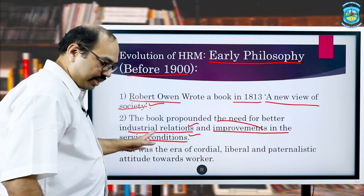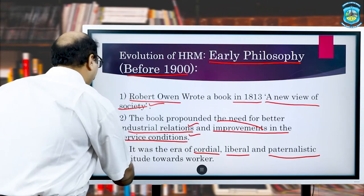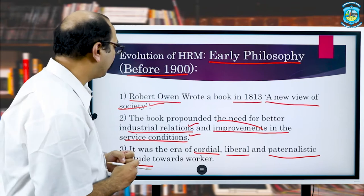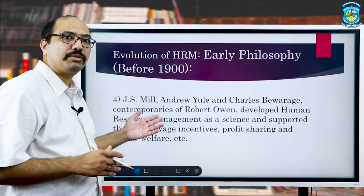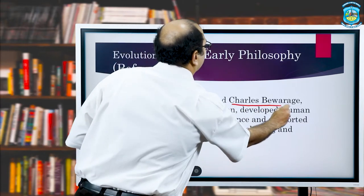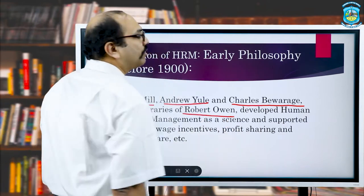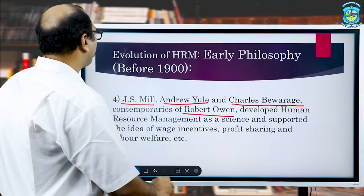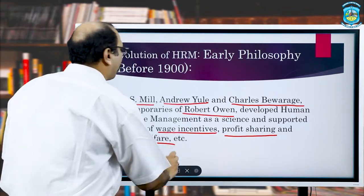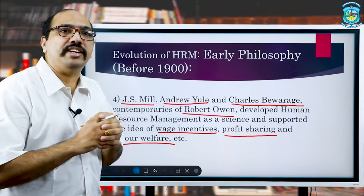This era was basically the era of development of cordial, liberal and paternalistic attitudes towards the worker. Others who contributed to this era include J.S. Mill, Andrew Yule and Charles Beveridge. They contributed by developing new ideas like wage incentives, profit sharing and labour welfare. Whatever was associated with the welfare of labourers got strengthened in this particular era.